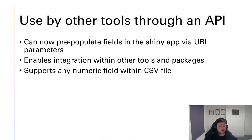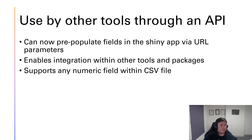We can now pre-populate fields in the Shiny app via URL parameters, and I'll talk more about that in a tutorial I'm going to produce in terms of how it actually works. The exciting thing about this is that it means the app can be integrated much more easily within other tools and packages. Any numeric field within the CSV file can be passed as a pre-populated field, and I'd like to work on passing non-numeric fields — such as those specific databases and registers — as values in the near future.